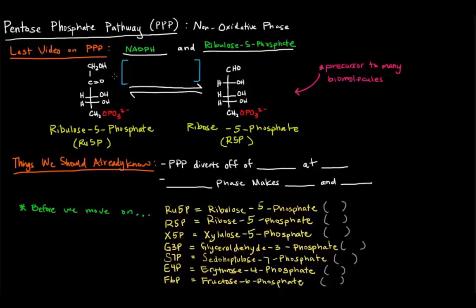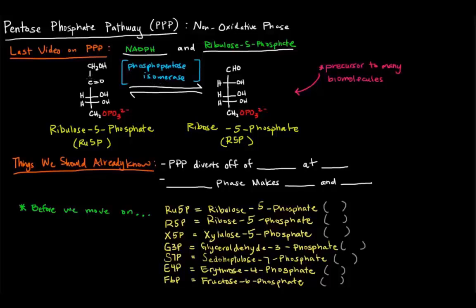The enzyme that catalyzes this reaction is called phosphopentose isomerase. That name makes sense — both compounds are pentoses, five-carbon sugars with phosphate groups, so phosphopentose makes sense. Isomerase makes sense because they're only slightly different. Ribulose 5-phosphate is a ketose — it has a carbonyl in between two carbons — whereas ribose 5-phosphate is an aldose, with its carbonyl as an aldehyde. Ribose 5-phosphate is of course a precursor to many biomolecules, including nucleic acids.